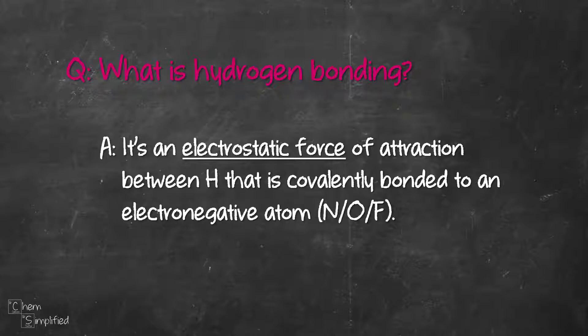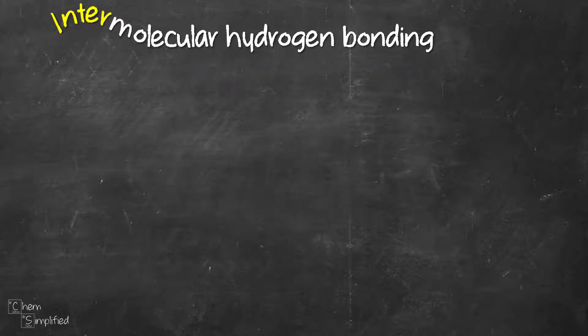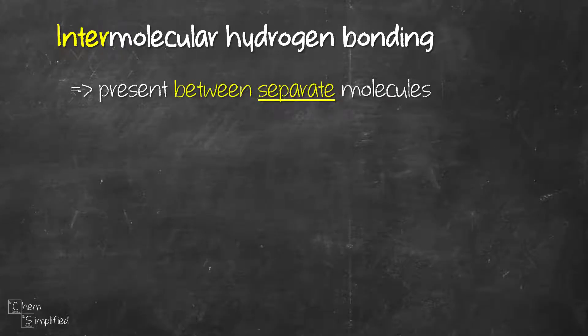Hydrogen bonds can happen two ways: intermolecular or intramolecular. Intermolecular hydrogen bond is present between separate molecules. The prefix inter means between two groups.